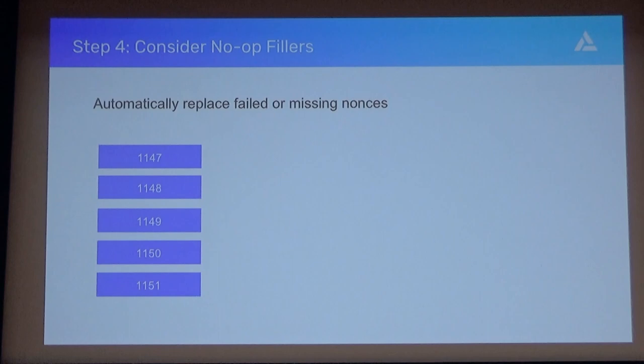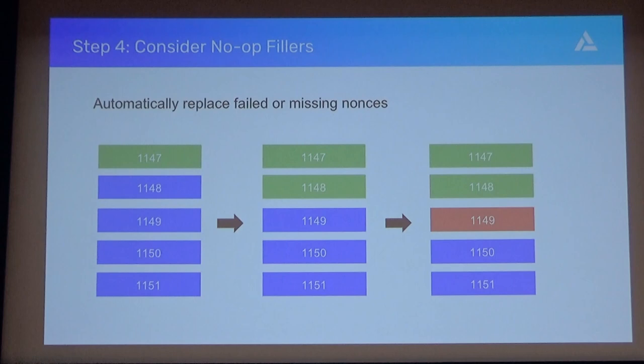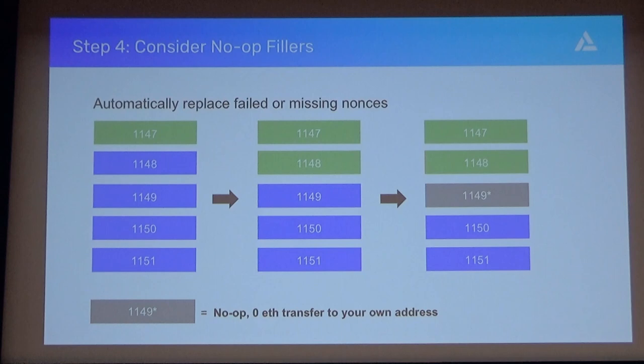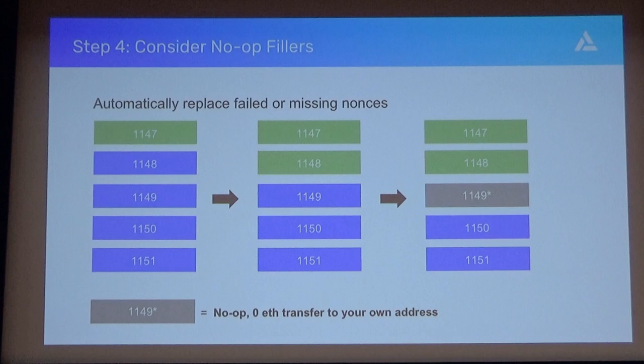The next solution is using no-op fillers. This is a way of handling the hanging transactions problem. Let's say you submit five transactions all at once with incrementing nonces—things are going well initially, they're getting run successfully, and then eventually one fails. Like we talked about, the next transactions would hang. What you can do is create a no-op—a zero-value transfer to your own address—and submit that with the same nonce as the failed transaction. That's a really quick way of jump-starting the system. This is pretty use-case dependent, because it means your transactions can't be dependent on strict ordering. But if you don't have that requirement, it's a solid way to keep things well-functioning.